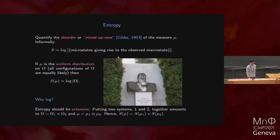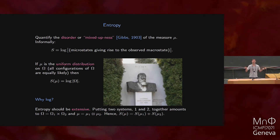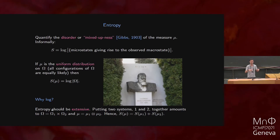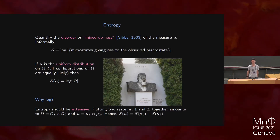Why do we take the log? The log is there because we would like this quantity to be a so-called extensive quantity — if you take two systems and put them together, you would like the entropy of the combined system to be the sum of the individual entropies. You can easily see that the logarithm does that: two systems' union is described by the Cartesian product of the configuration space, and the entropy of the combined system is the sum of the entropies, thanks to the log.